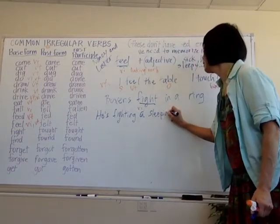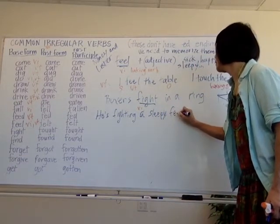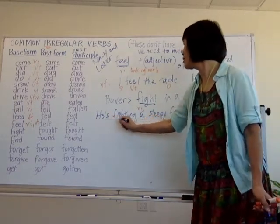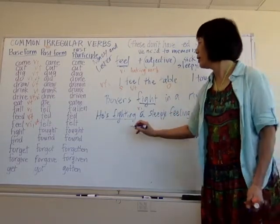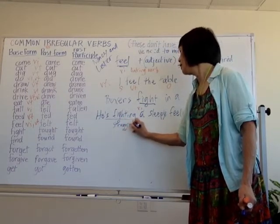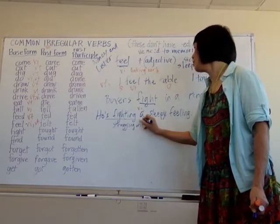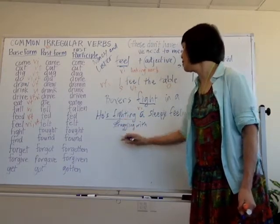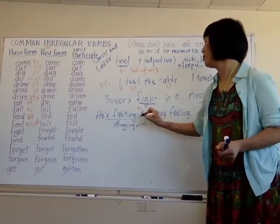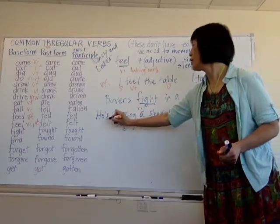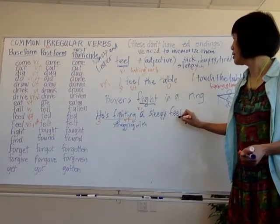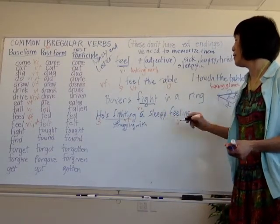He's fighting a sleepy feeling — he's struggling to stay awake. We could also say 'struggling with,' but 'fighting' can be a transitive verb here: the subject is 'he,' the verb is 'is fighting,' and the object is 'a sleepy feeling.' Sometimes parents will tell their kids what to do, and a kid might resist — the parent says 'don't fight me.' That can also be transitive.